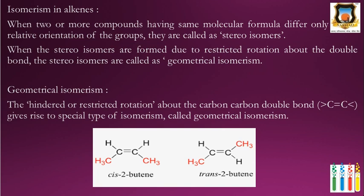Next is isomerism in alkenes. Isomers are two or more compounds having the same molecular formula but differing only in the relative orientation of groups — they are called stereoisomers. When stereoisomers are formed due to the restricted rotation about the carbon-carbon double bond, they are called geometrical isomers. Geometrical isomers arise due to restricted rotation about the carbon-carbon double bond, giving rise to a special type of isomerism called geometrical isomerism.